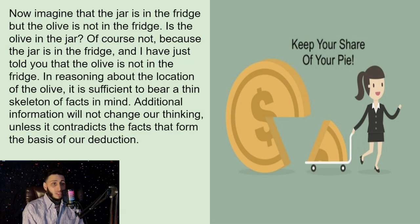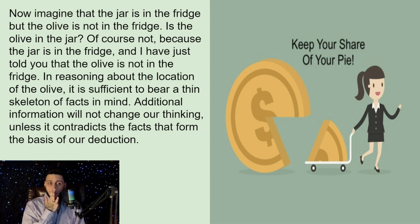Now imagine that the jar is in the fridge, but the olive is not in the fridge. Is the olive in the jar? Of course not, because the jar is in the fridge, and I have just told you that the olive is not in the fridge. In reasoning about the location of the olive, it is sufficient to bear a thin skeleton of facts in mind. Additional information will not change our thinking unless it contradicts the facts that form the basis of our deduction.